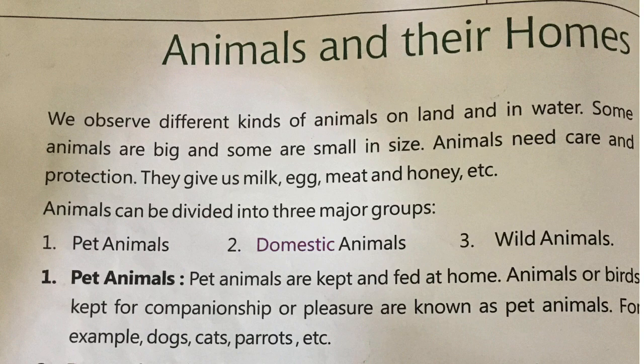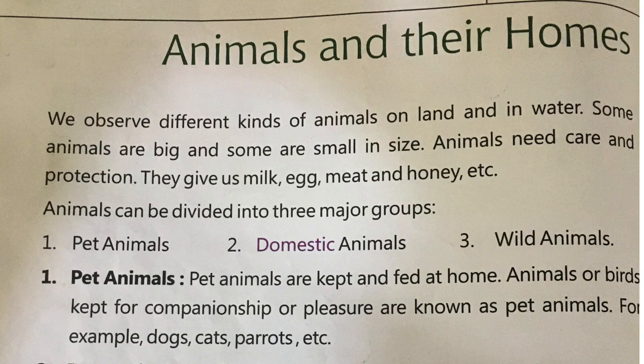Here in the first paragraph, it is written that there are different kinds of animals in this world. We can see some animals on land such as dog, cat and all, and some animals in water such as fish or other creatures like crocodile. Animals are of different sizes — some are big, some are small. We all need to take care of animals. They also give us milk, egg, meat, honey etc. All these animals are divided into 3 groups: first is pet animal, second domestic animals, third wild animals.